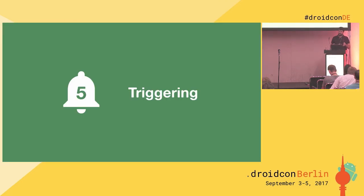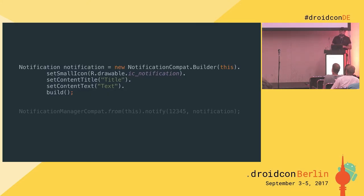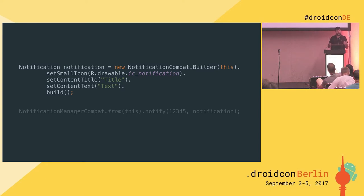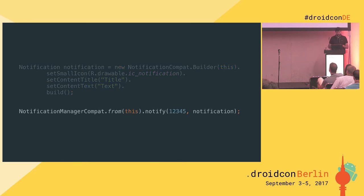Now that we're sure we have a good notification and a good use case, let's trigger it. Triggering is the simple part. You create a new notification — the only three mandatory fields are small icon, content title, and content text. This is not entirely true since Android O, where you also need to provide the channel ID. You use NotificationCompat, and since the notification UI really changed over time, Google provided the compat library to help you handle API changes. Then you notify with NotificationManagerCompat, providing an ID and the notification.